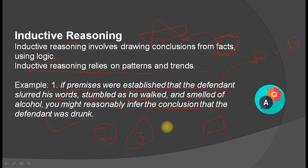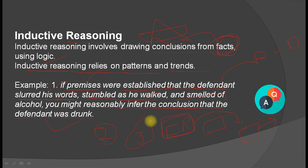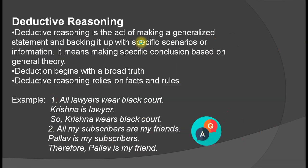Another example: in the last few years, every year one question from Fundamental Rights topic has appeared in the exam. So probably next year also one question from Fundamental Rights will come - you draw that conclusion. But that question might come or might not come. There are also various types of inductive reasoning: generalized, statistical, sample, analogical, etc., but we won't cover all of those in this video.